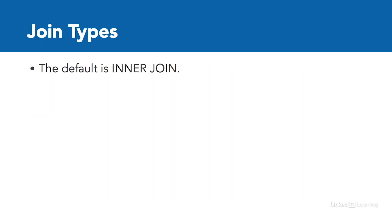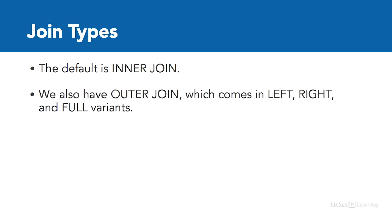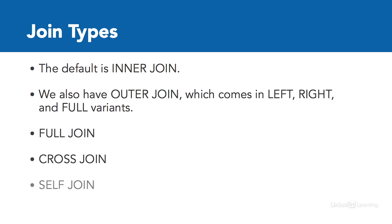Joins come in various forms. The default is known as an inner join, which returns all the matching records in the included tables. An inner join can be specified in the FROM or the WHERE clause, although it is most common to use it in the FROM clause. Outer joins come in three flavors known as left, right, and full outer joins. We also have full joins, cross joins, and self joins.